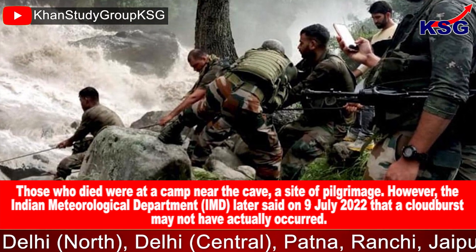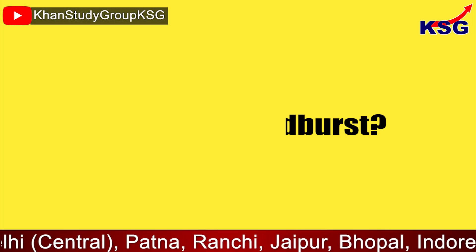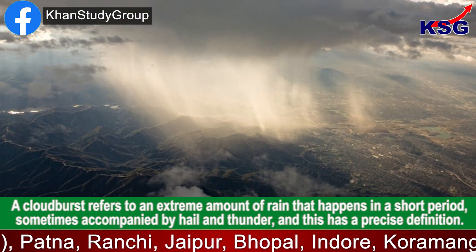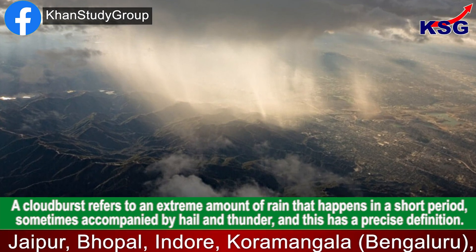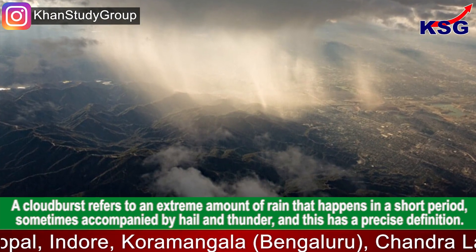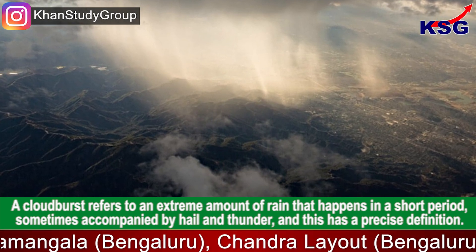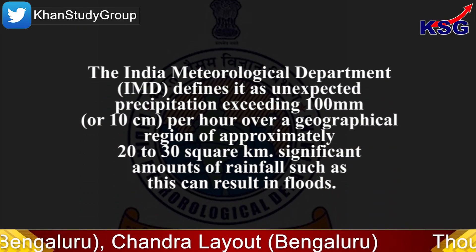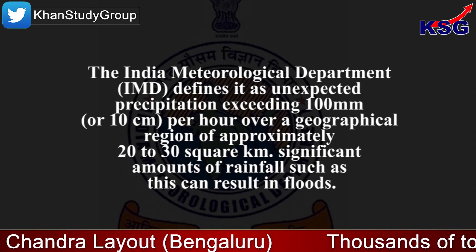However, the Indian Meteorological Department, or IMD, later said on 9th of July that a cloud burst may not have actually occurred. So, what is a cloud burst? A cloud burst refers to an extreme amount of rain that happens in a short period, sometimes accompanied by hail and thunder, and this has a precise definition.